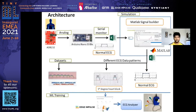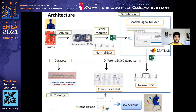This is the overall architecture and flow of the project — data acquisition, simulation, modeling, and deployment. I used an ECG sensor AD8232 connected to the analog input of the Arduino Nano 33, and I collected my own heart ECG readings, copying them from the serial monitor into Excel data.